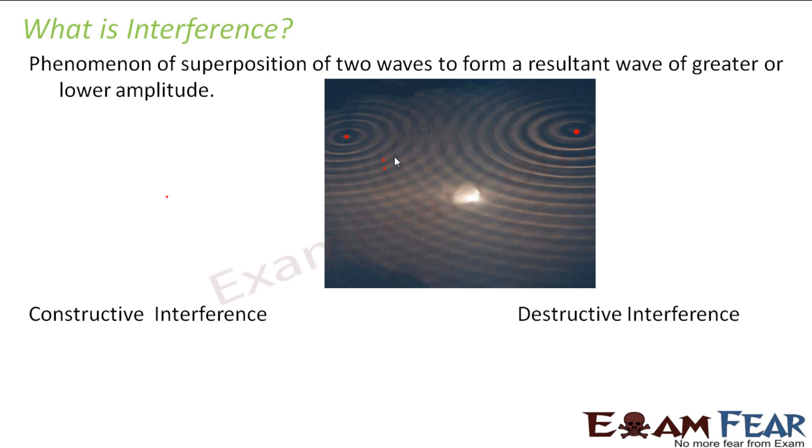there are two kinds of interference. Constructive interference, that is nothing but similar to constructive overlap. Destructive interference, same as destructive overlap. So in constructive interference, you have a resultant wave of greater amplitude, whereas in destructive interference, you have a resultant wave of lower amplitude.